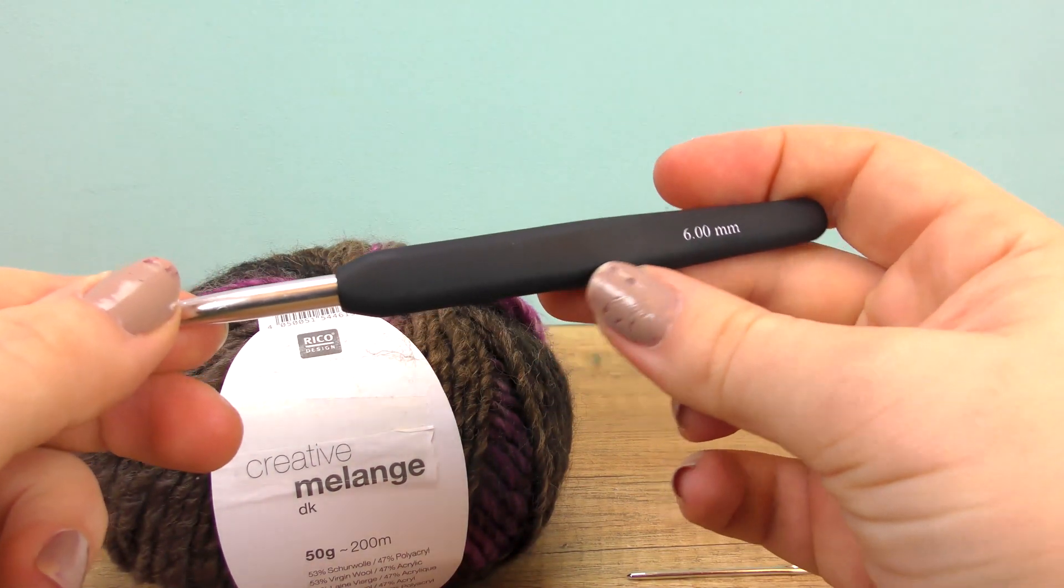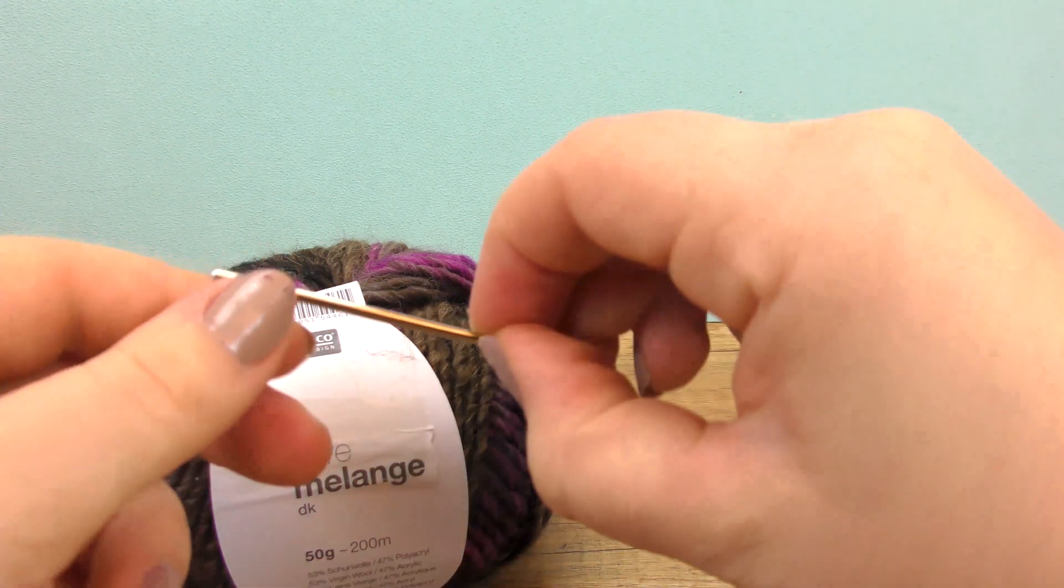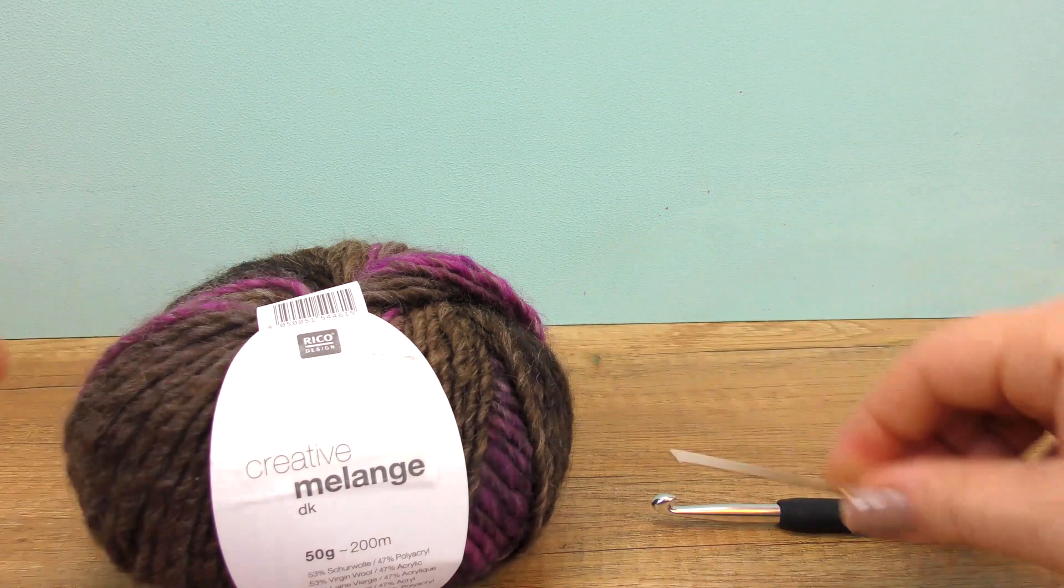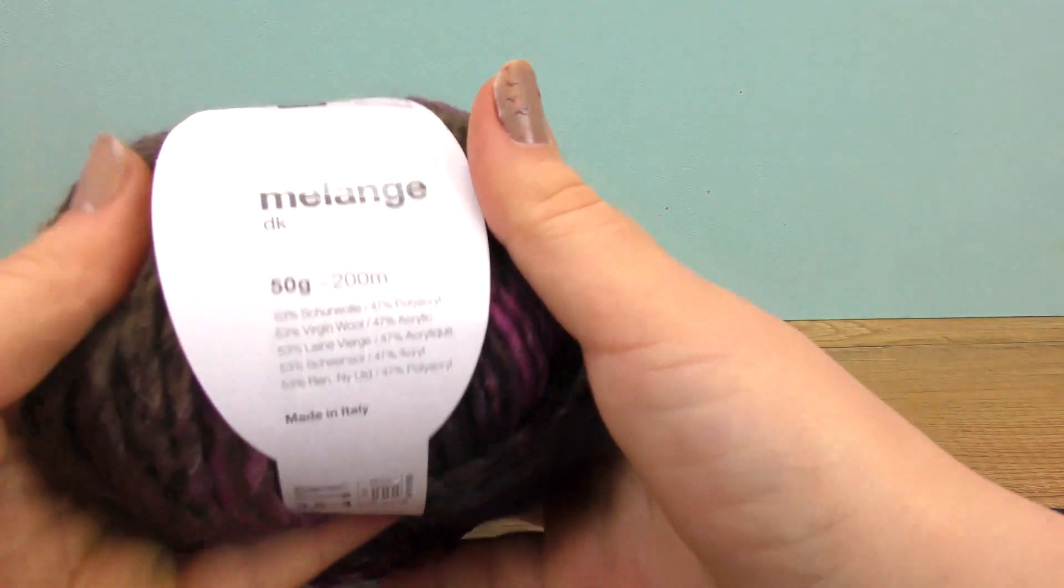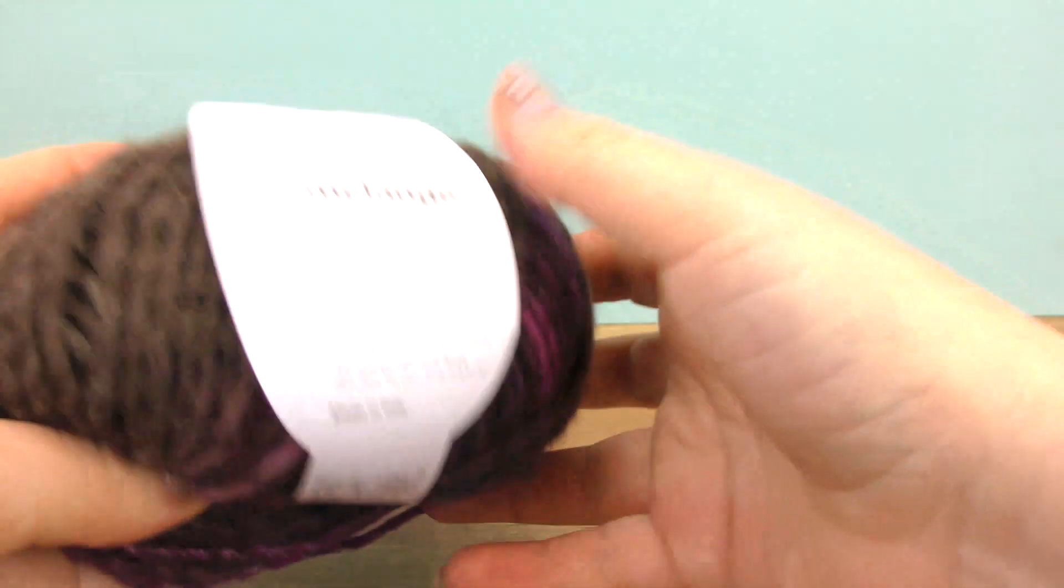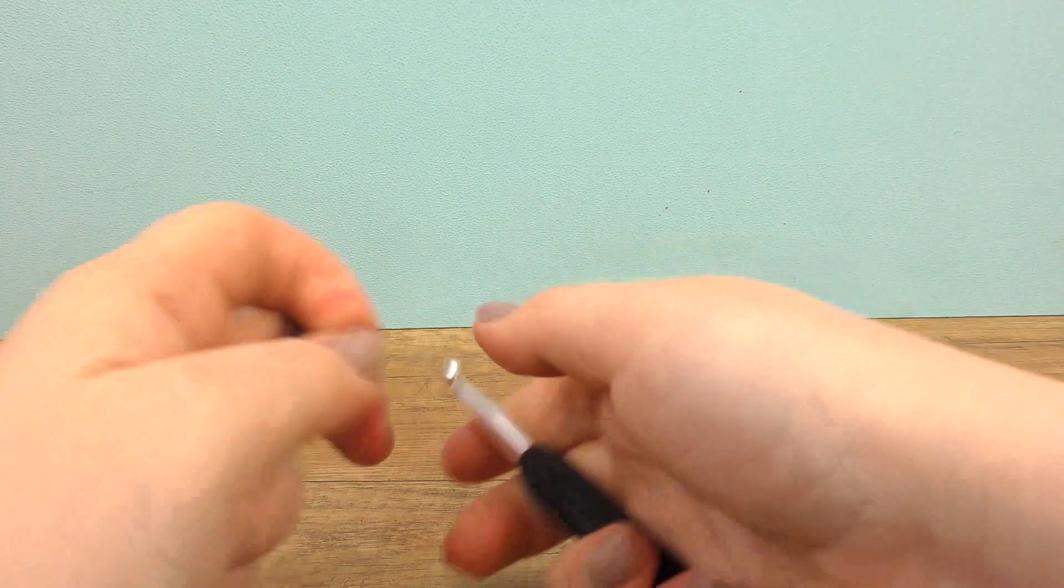I'm using a crocheting needle that's 6 millimeters thick today to match my wool, and then a sewing needle so that we can sew the two ends together. Our wool has a lovely color gradient. Let's start with a loop on our needle.